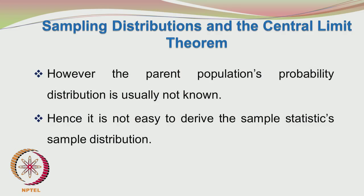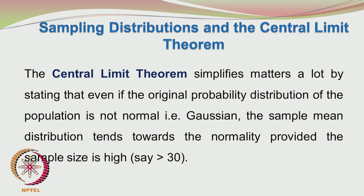What is the central limit theorem? That is going to be the focus for the next half or so. Since the parent population probability distribution is usually not known, we cannot directly say what the sampling distribution is. The central limit theorem simplifies matters by stating that even if the original probability distribution of the population is not normal — i.e., not Gaussian — the sample mean distribution tends towards normality provided the sample size is high, say greater than 30.